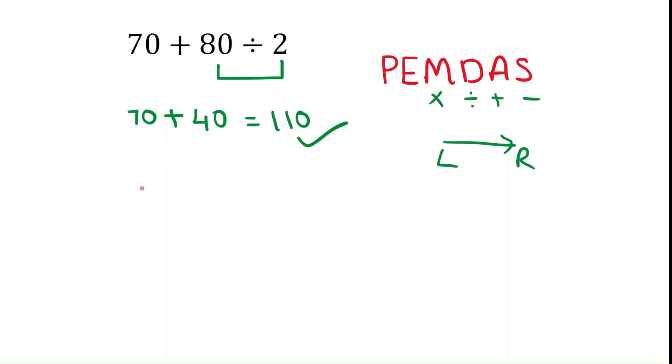But a few students will get confused and they will do the addition first. If you do addition first then it will be like 70 plus 80, then this will be 150. And next if you do divided by 2 then it will be 75.